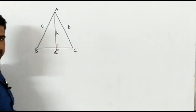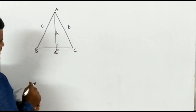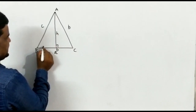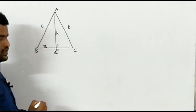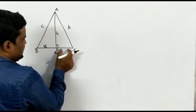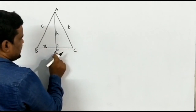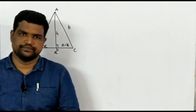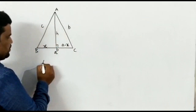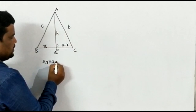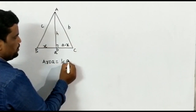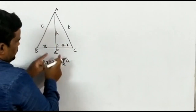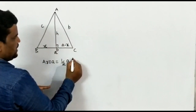For our convenience, let the length of BD be X, so that the length of DC becomes A − X. We know that the basic formula for area of a triangle is: Area = (1/2) × base × corresponding height, and the corresponding height is H.